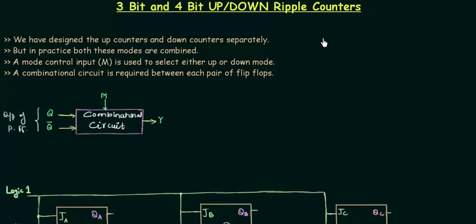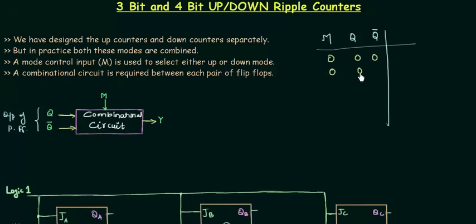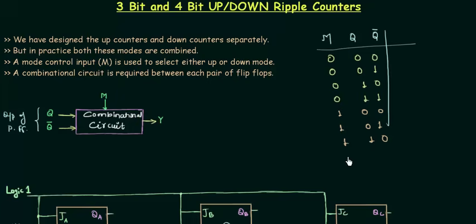The first input is M, the mode control input, then Q, and then Q complement. As there are 3 inputs, we have 8 possible combinations. So let's write all the possible combinations: 0,0,0; 0,0,1; 0,1,0; 0,1,1; then 1,0,0; 1,0,1; 1,1,0; and 1,1,1. These are the 8 possible combinations. Now how can we decide the output Y? We have to first set some logic.